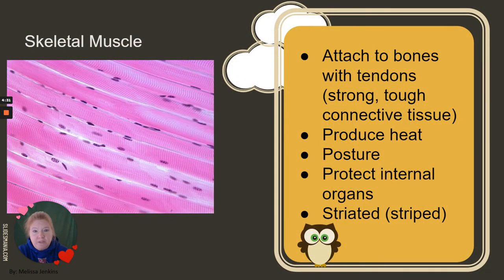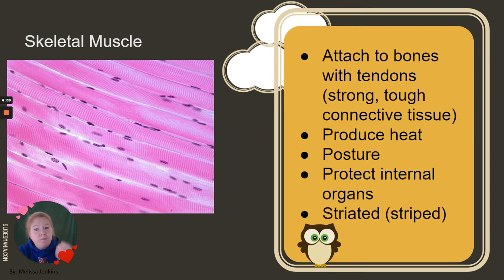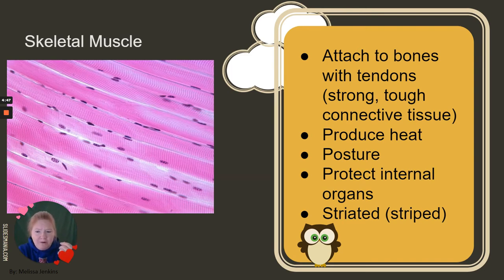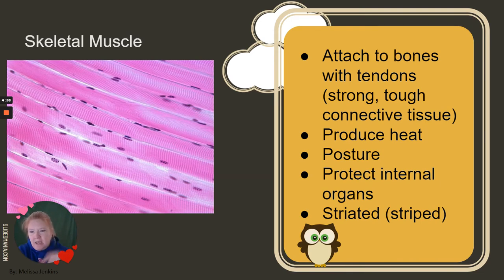Skeletal muscles attach to bones with tendons — strong, tough connective tissue. Skeletal muscle is what produces heat: we shiver and our skeletal muscles produce heat, which is also why you get warm when exercising. It's responsible for posture, protects our internal organs as a layer of protection, and they're striated — you can see those striations or stripes in the histology slide.